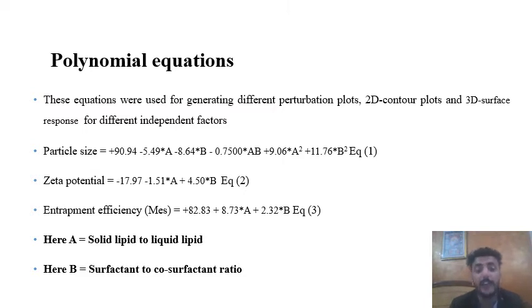For particle size, the equation is +90.94 - 5.49A - 8.64B - 0.75AB + 9.06A² + 11.76B². The negative sign with factor B means whenever there is an increase in surfactant ratio, particle size is decreasing.